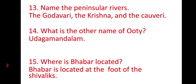Name the Peninsular Rivers. The Peninsular Rivers are Godavari, Krishna, and Kaveri. What is the other name of Ooty? Ooty is also a summer hill station. Its other name is Udagamandalam. Ooty is located at the foot of the Nilgiri Hills.